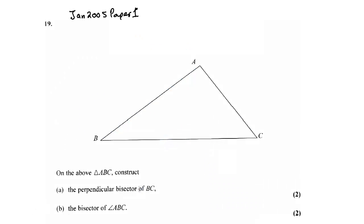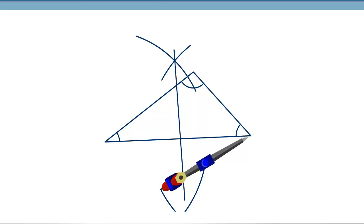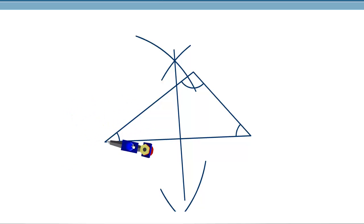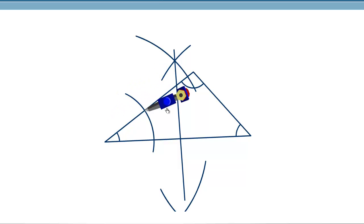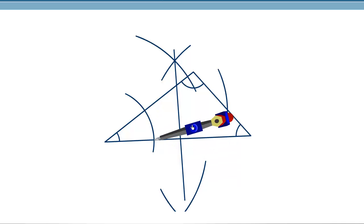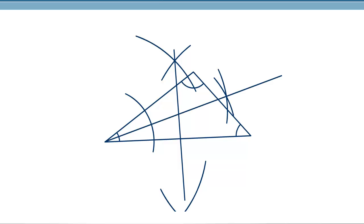Next, we have to find the angle bisector of angle ABC. We put the compass at B and draw an arc to mark both sides of the angle. Then, keeping the same or a slightly longer distance, we draw arcs from each intersection point. We join the vertex B to the intersection of those arcs — that is the angle bisector.